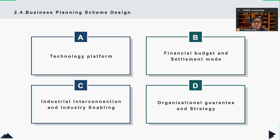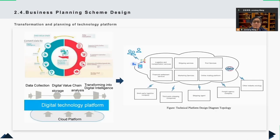Hence, I designed the BA planning scheme for COSCO in four parts. Firstly, COSCO should conform to the trend of industrial development and take advantage of the rapid development of digital technology. Using digital technology as the driving force, deeply integrate new technology with the shipping logistics industry. This can be realized by building a one-stop full-chain solution of SaaS cloud services.